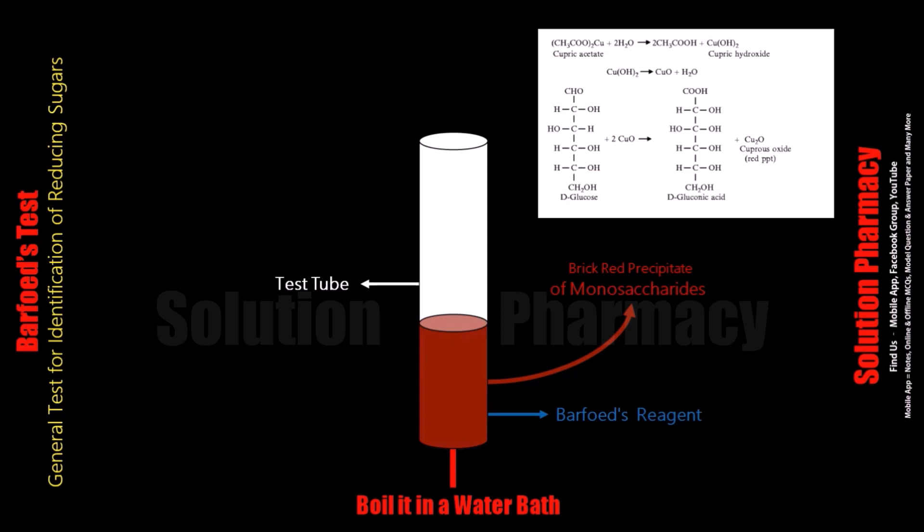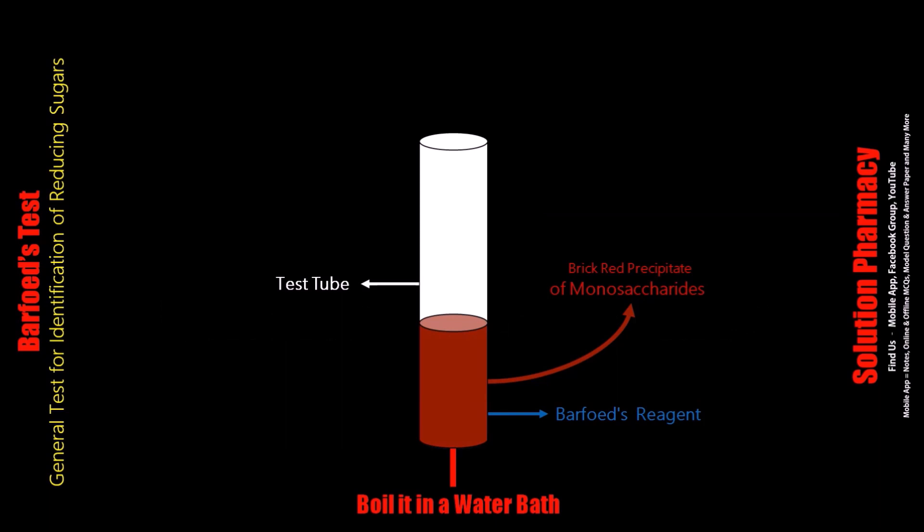Barfoed's test is done by controlling the pH and the time of heating. It is boiled only for 2 minutes and acidic pH is maintained because reduction of copper takes place under acidic conditions. Reducing monosaccharides give red color precipitate within 2 minutes.